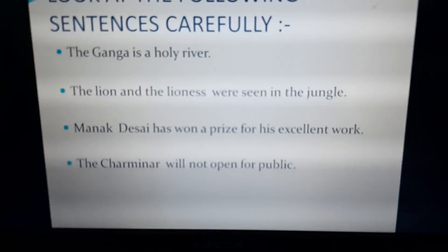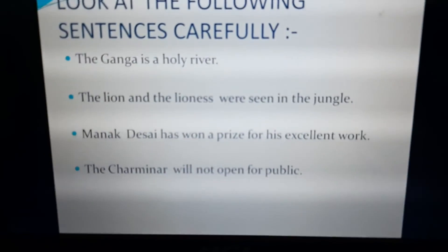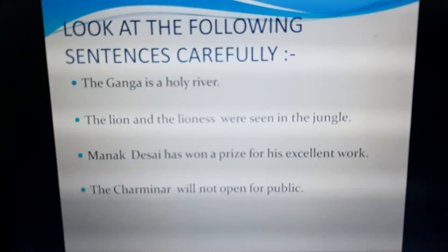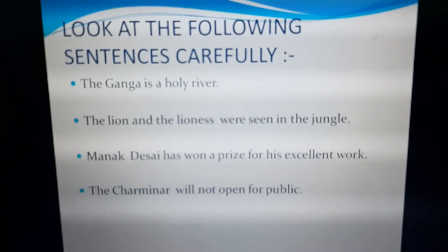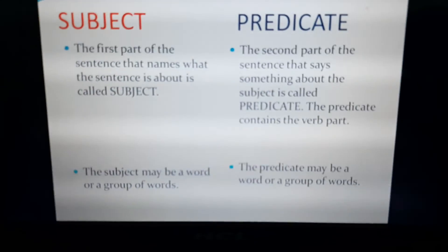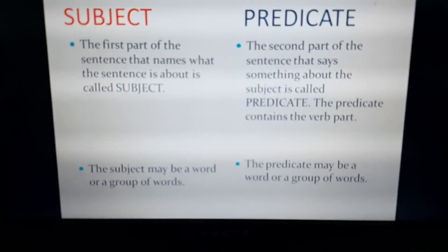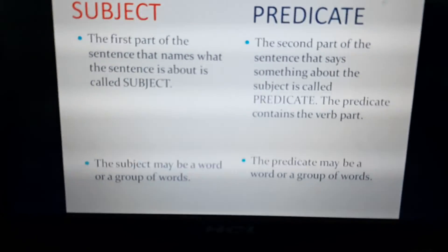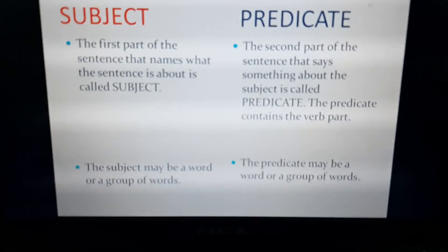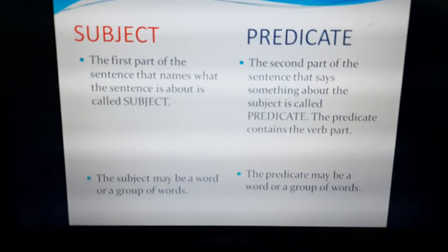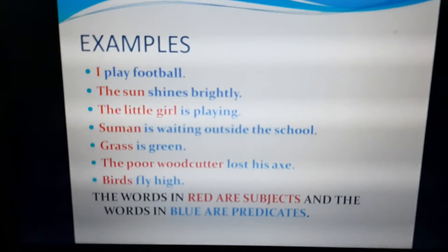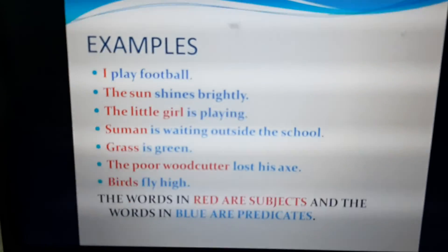The Charminar will not open for public — what information is given about the Charminar? That it will not open for public. So, the predicate will be will not open for public. Also remember that the subject may be a word or a group of words. Similarly, the predicate may be a word or a group of words. One more important thing about the predicate: it contains a verb part. Here are some more examples to identify the subject and the predicate.